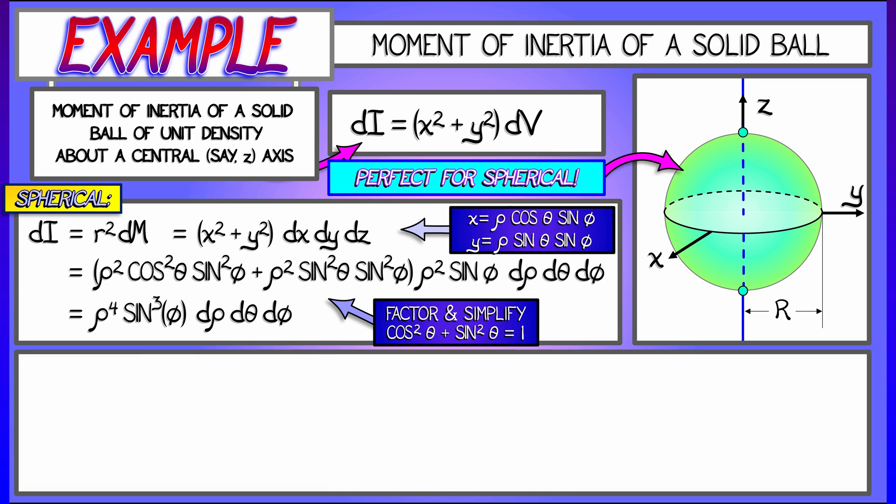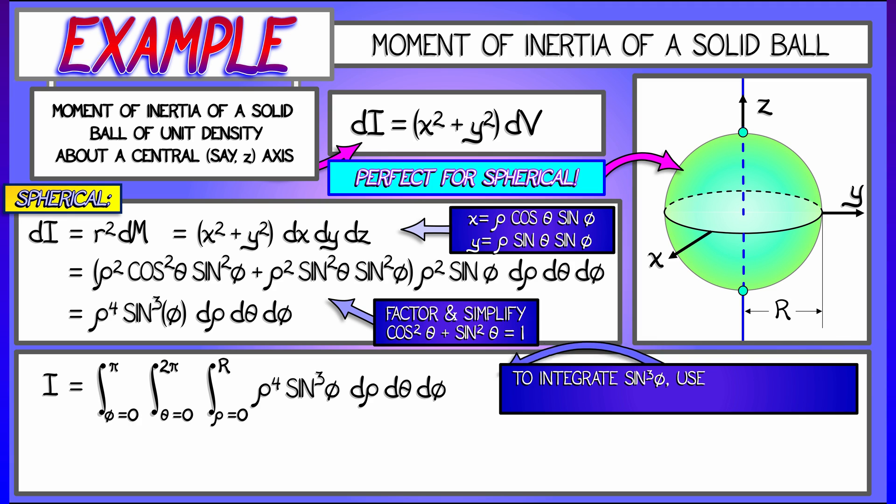Now, all I have to do is integrate that as rho goes from 0 to r, theta goes from 0 to 2 pi, and phi goes from 0 to pi. That's going to be so easy. The only thing that's a little tricky is that the sine cubed phi term is going to require a substitution. We're going to break that up into sine times sine squared, replace sine squared with one minus cosine squared, and then do a little u substitution, the way we did back in single variable calculus.